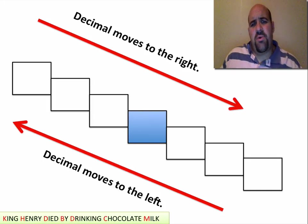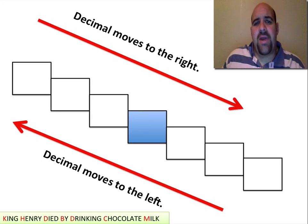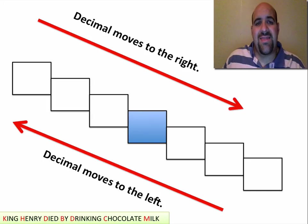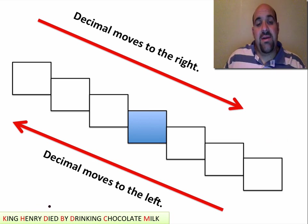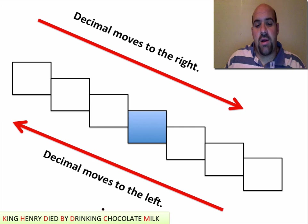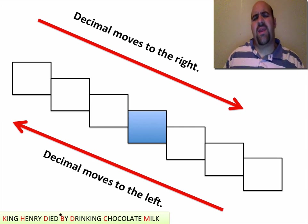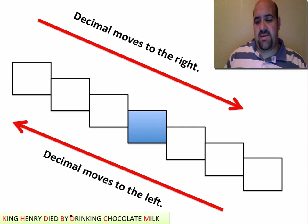Hi, this is Mrs. Spone here, and today we're going to look at metric conversions using the ladder method. There's a little mnemonic down here: King Henry died by drinking chocolate milk, and this is a way to remember metric prefixes.